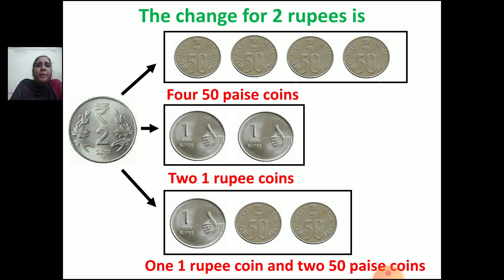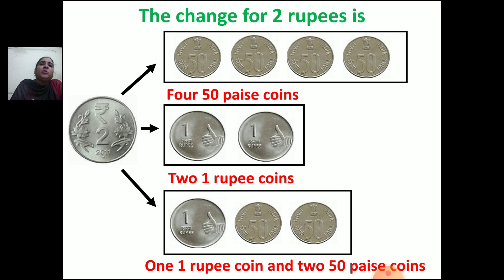Now if you want to give change for 2 rupees and you have both 50 paise and 1 rupee coins, how much of each will you take? You will take 1 one-rupee coin and 2 fifty-paise coins. Two 50 paise coins make 1 rupee, so 1 rupee plus 1 rupee is 2 rupees. This is how you can show the change for 2 rupees.